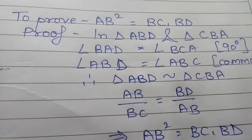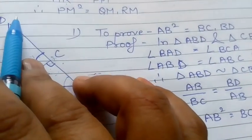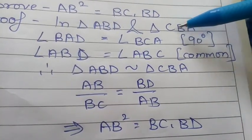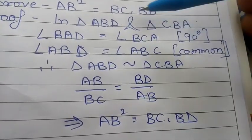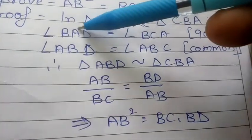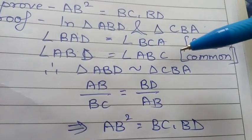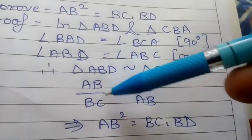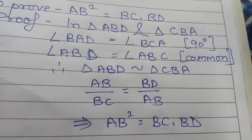To prove AB² = BC·BD, we need sides AB, BC, and BD. Comparing triangles ABD and CBA: angle A = angle C (both 90°), angle B is common, and angle D = angle A. Therefore the triangles are similar. Since the triangles are similar, sides are proportional: AB/BC = BD/AB. Cross-multiplying gives AB² = BC·BD. Hence proved.